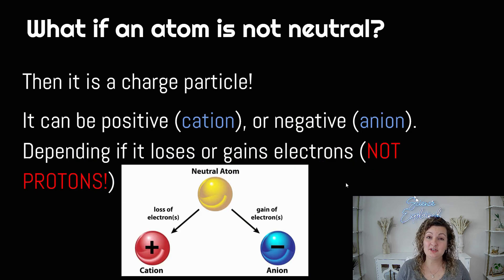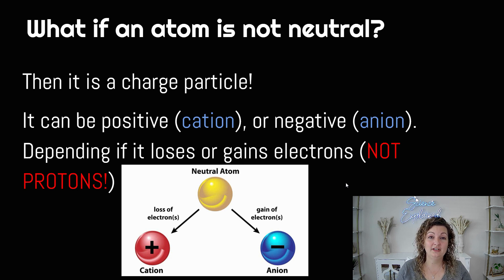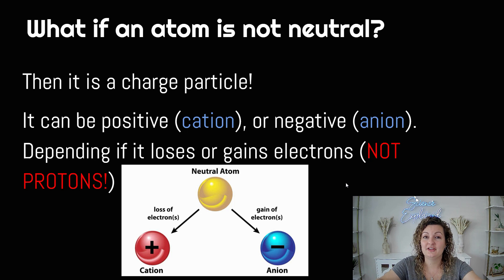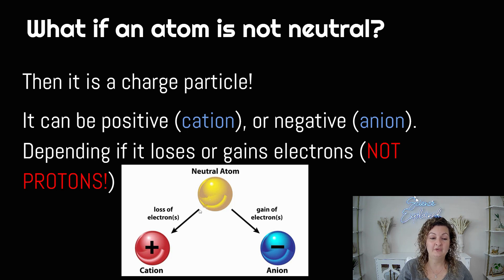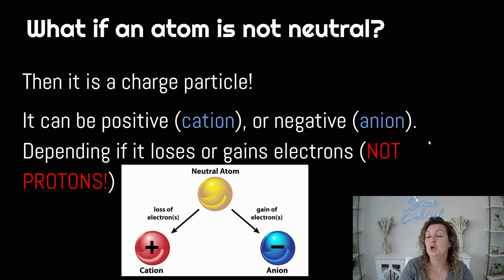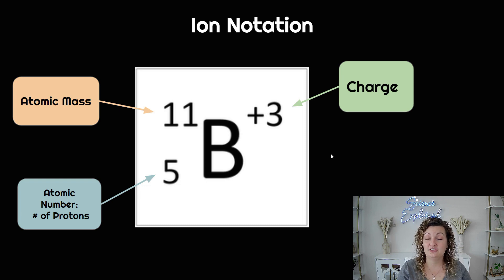So what if an atom is not neutral? It's just going to be a charged particle then — there are two different types. You can have one that's positively charged, and we call that a cation, and one that's negatively charged, and we call that an anion. An atom is going to either gain electrons and become more negative, or lose electrons and become positive. If you lose electrons you become a cation, which is positive. If you gain electrons you become a negative anion. This has nothing to do with the gain or loss of protons — we are not gaining or losing protons to change our charge. We're simply talking about electrons only.